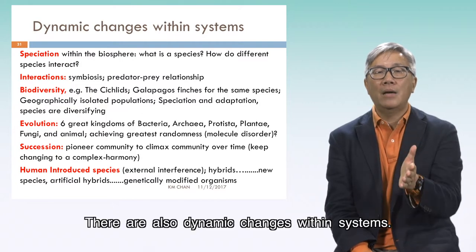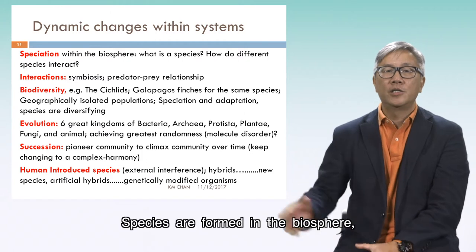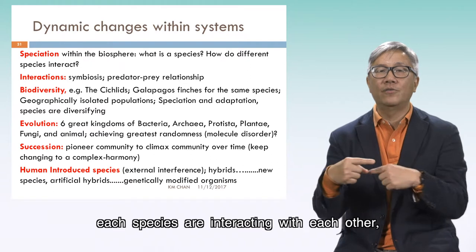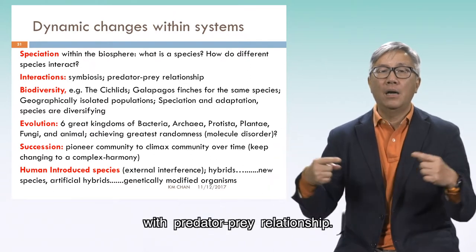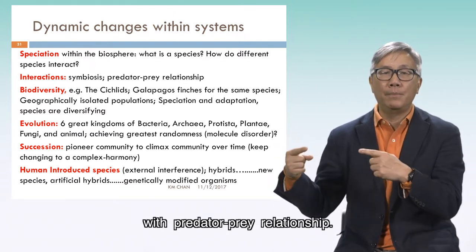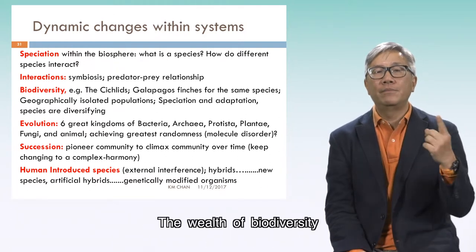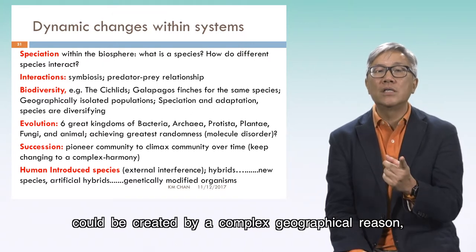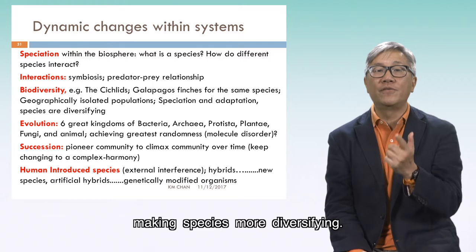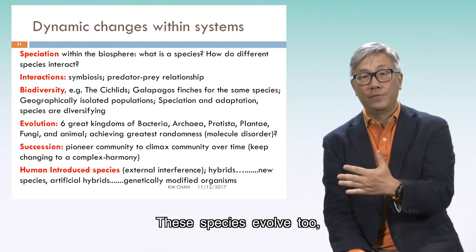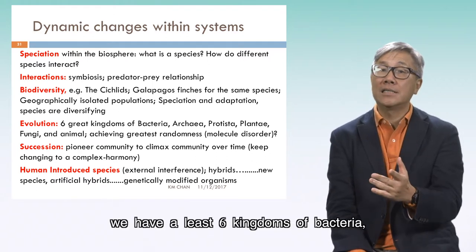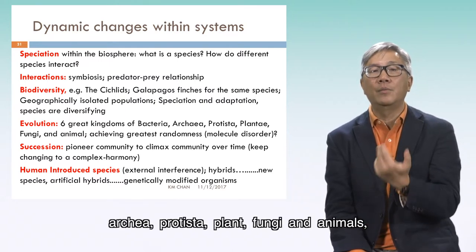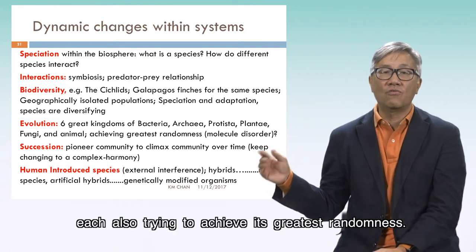There are also dynamic changes within systems. Species are formed in the biosphere, and each species interacts with each other — including predator-prey relationships. The wealth of biodiversity could be created by complex geographical reasons, making species more diversified. These species evolve too. We have at least six kingdoms: bacteria, archaea, protista, plants, fungi, and animals, each also trying to achieve its greatest randomness.